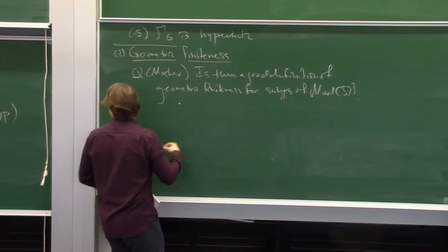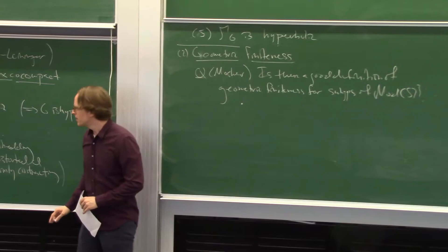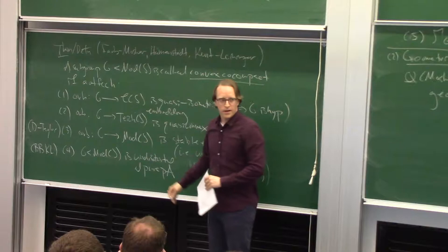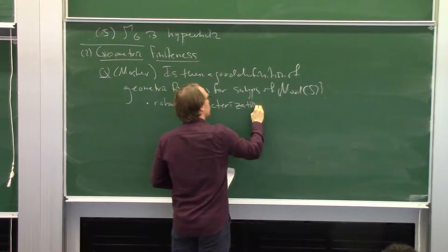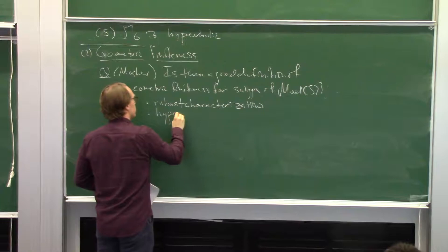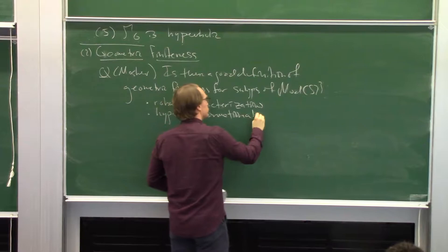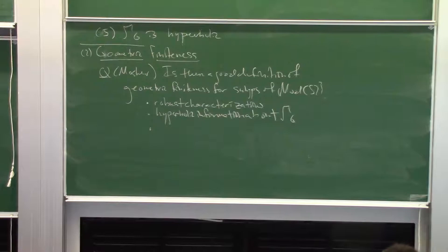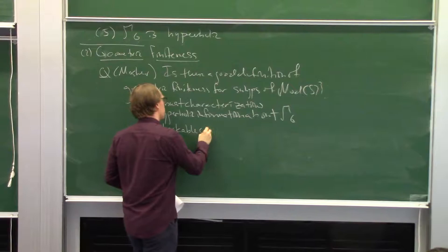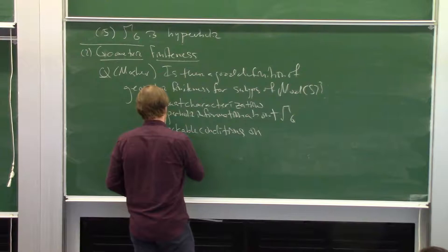What do we actually want from a good definition? We have our favorite objects: the curve graph, Teichmüller space, the Cayley graph or Martian graph for the mapping class group. So we want some robust characterizations. For any such definition we want hyperbolic information about the extension group — that's the whole point. And we want kind of checkable conditions that work on the key examples.